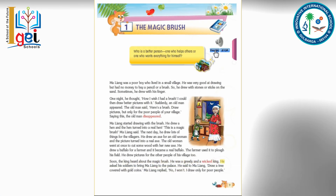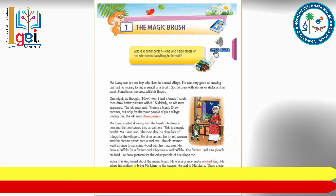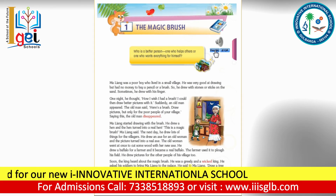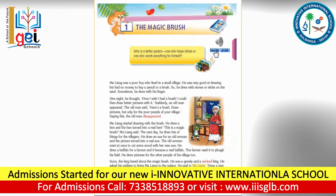Soon the king heard about the magic brush. He was a greedy and wicked king. He asked his soldiers to bring Ma Liang to the palace. He said to Ma Liang, 'Draw a tree covered with gold coins.' Ma Liang replied, 'No, I won't. I draw only for poor people.'